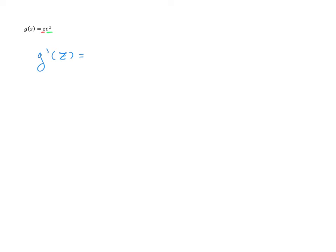What about the second derivative of g of z, where z is the variable, and g of z equals z times e to the z — a product of two functions? If we want the second derivative, we need the first derivative first. The product rule gives us 1 times e to the z — that's the derivative of the first times the second — plus z times e to the z. So here is our first derivative: e to the z plus z times e to the z.